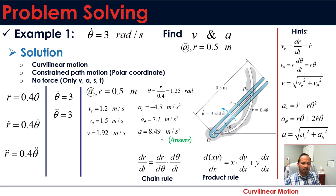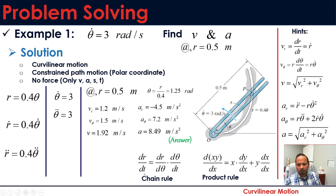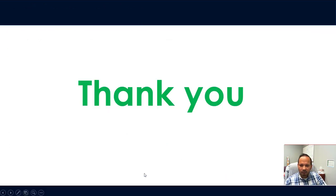The main takeaway is that when applying polar or cylindrical coordinate systems, be aware that you may need to use the chain rule. If r is given as a function of theta rather than time, there is a mismatch between the function variable and the derivative variable, and the chain rule is required to resolve it. That concludes today's session — see you next time, take care.